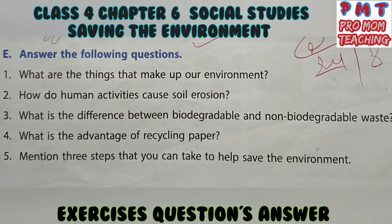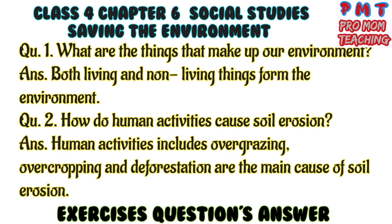Answer the following questions. Question one: What are the things that make up our environment? Answer: Both living and non-living things form the environment. Question two: How do human activities cause soil erosion? Answer: Human activities including overgrazing, overcropping, and deforestation are the main causes of soil erosion.